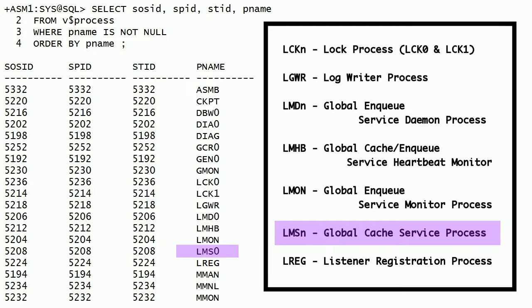LMS0 is the global cache service process. In Oracle Real Application Clusters, this process maintains the lock database for global cache service and buffer cache resources. This process receives, processes, and sends global cache service requests, block transfers, and other global cache service related messages.